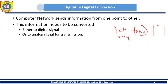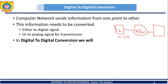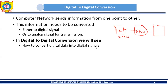Our aim is to transmit this information. Before transmitting this information from computer one to computer two, it is necessary that this information be converted either to a digital signal or to an analog signal. In digital to digital conversion, we will see how to convert digital data into a digital signal.